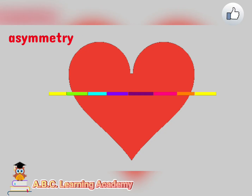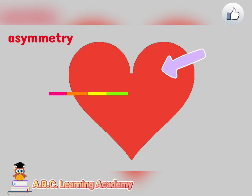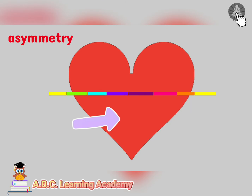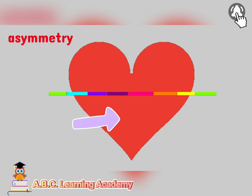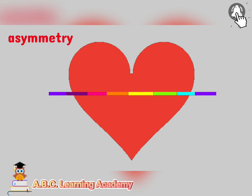For example, we have here a heart shape, and we're going to fold it horizontally. Is the top part of the heart equal to the bottom part of the heart? No, it's not. Therefore, this example is asymmetry. Because both sides are not equal if we're going to cut it horizontally.